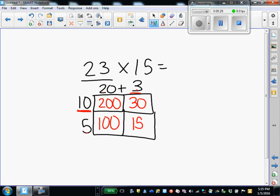Now, we're just going to add all those products together. You can make a list going down, lining up your place values. You can add mentally. So I'm going to go across here. 200 plus 30 gives me 230. 100 plus 15 gives me 115. Add those together. I get 345. So 23 times 15 is 345.